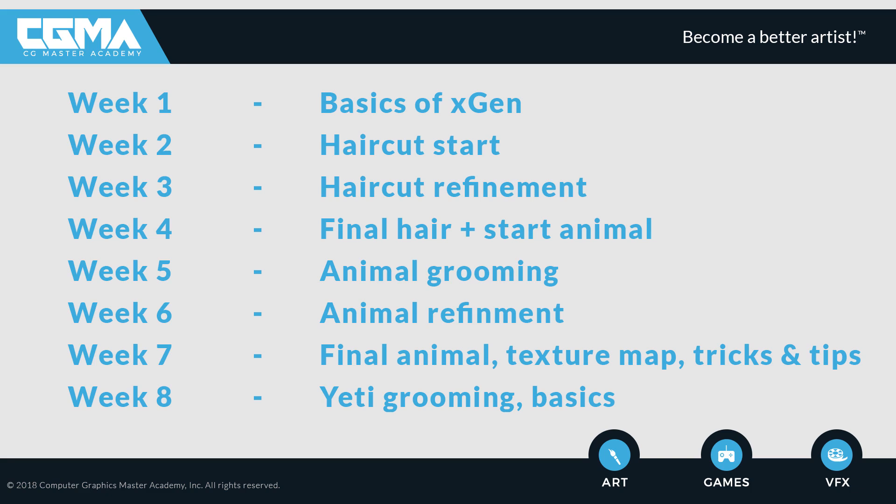During the next week we'll do a human haircut — I'll do my own haircut more or less — and if we have time I'll also do eyebrows, eyelashes, and a beard to give you a quick overview of how to do those. Then in week four, about three weeks in, we'll start doing an animal groom: I'll show you how to set up your references for animals or creatures and we'll do one from scratch, trying different grooming processes so you can choose the one you like most.